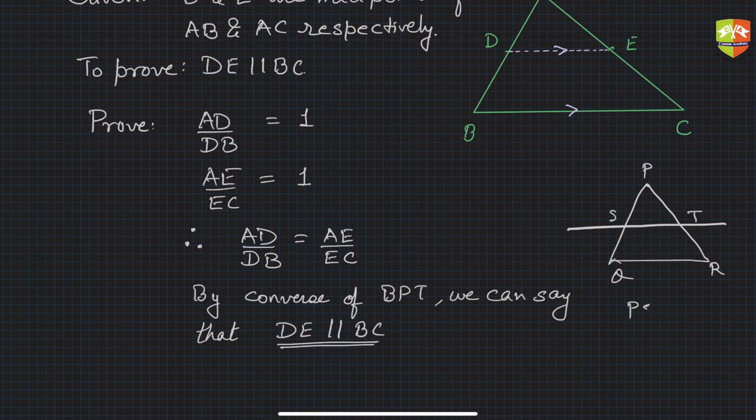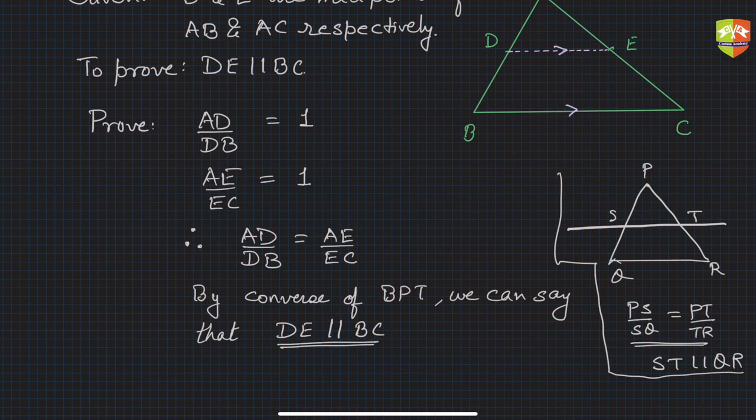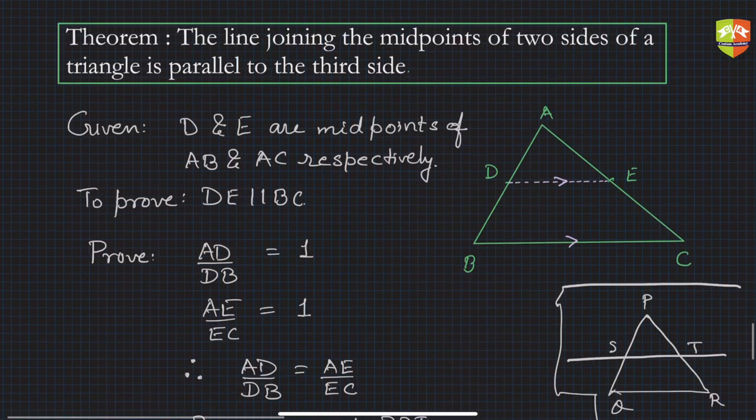And it divides in such a way that PS/SQ = PT/TR, then ST will be parallel to QR. This is what is converse of BPT and using this converse of BPT we could establish this given theorem.